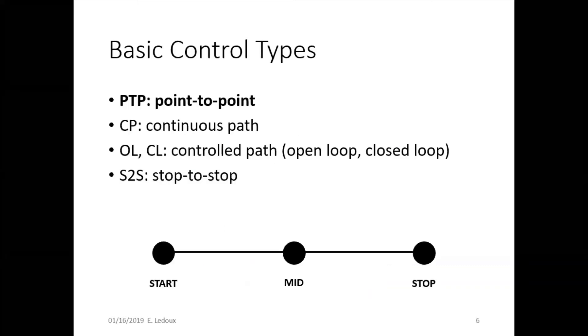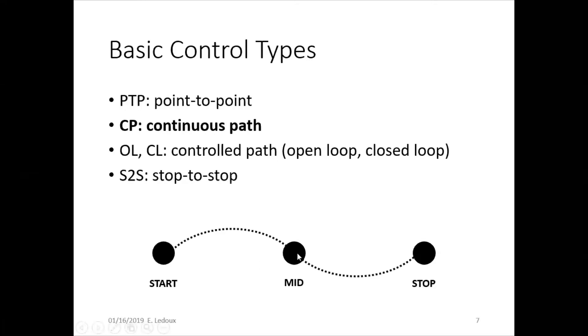There are lots of control types. Point-to-point is when the robot goes straight from one point to the next point to the next point in straight lines. Then continuous path links those points smoothly. So instead of starting and stopping in each spot, the robot keeps moving from the beginning all the way to the end smoothly.